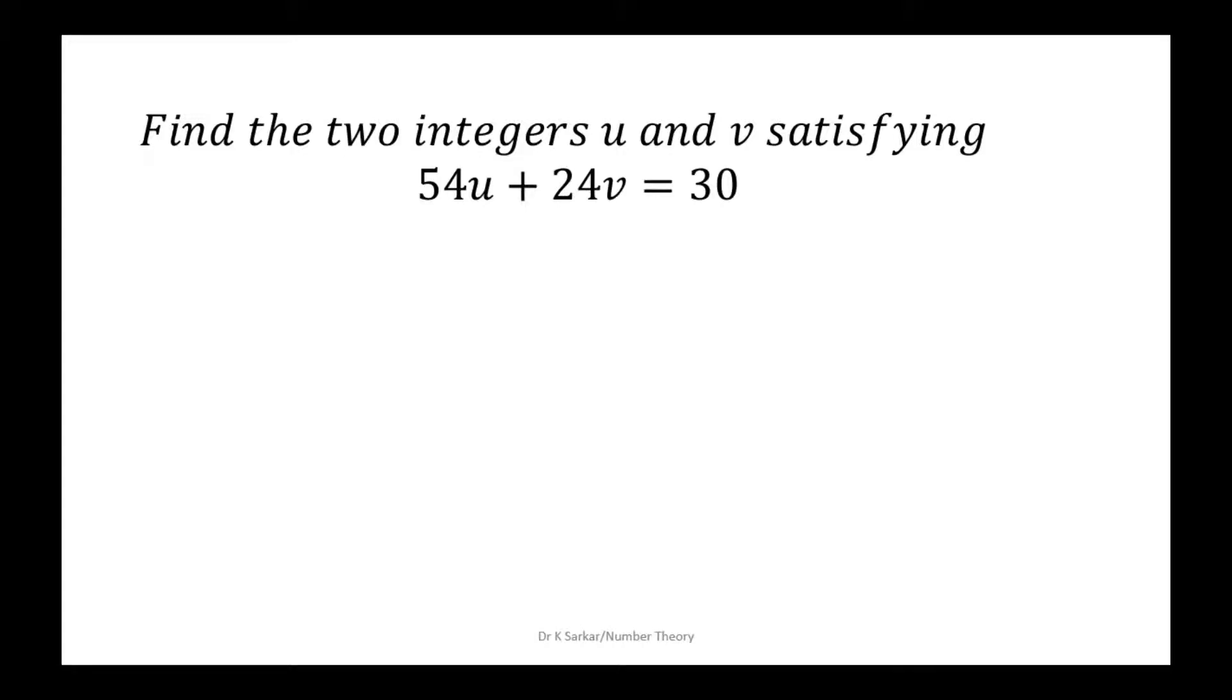Hello everyone, we are going to solve this question. Find the two integers u and v satisfying 54u plus 24v equals 30.